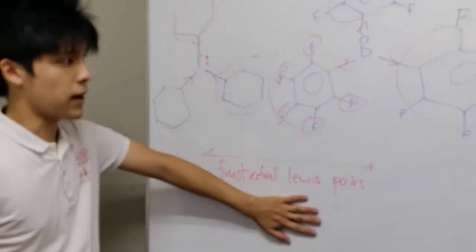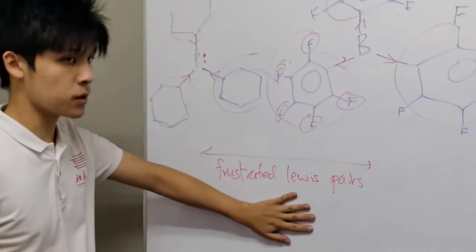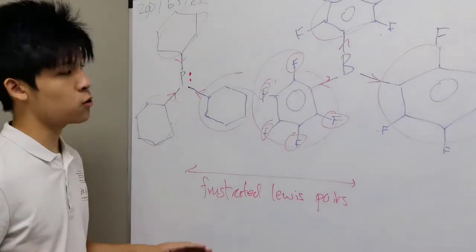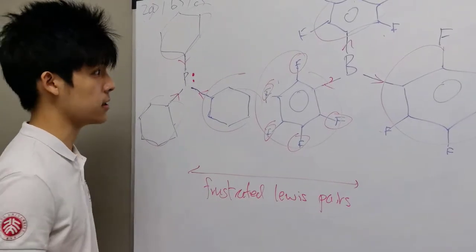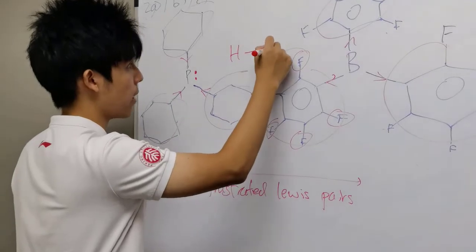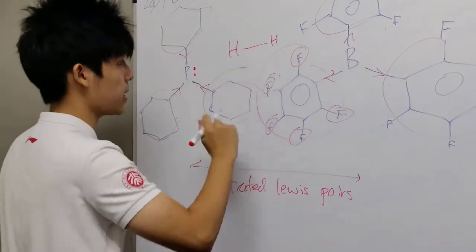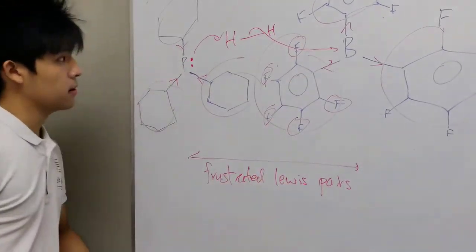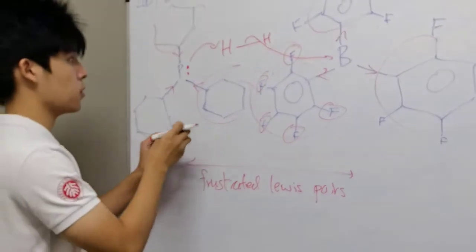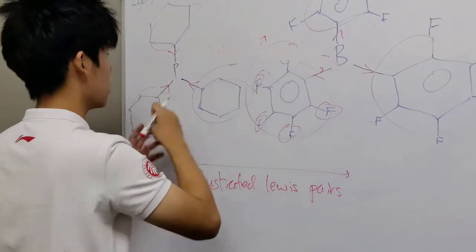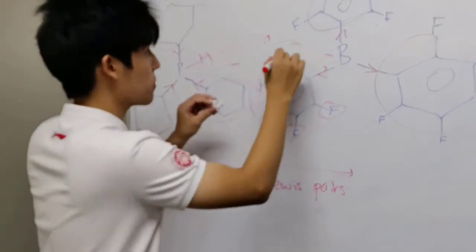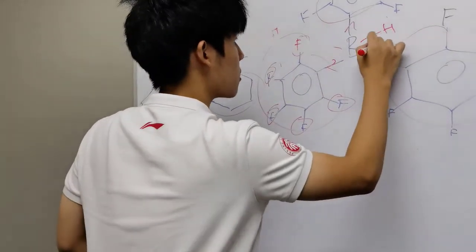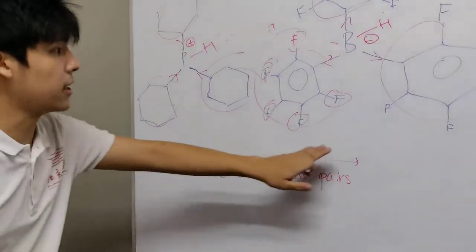The frustrated Lewis pair is very useful in catalysis because it is able to rip apart small molecules very easily. For instance, if you have a hydrogen molecule between the P and B, this could readily happen to produce a phosphonium compound with a positive charge and a borate compound with a negative charge. And so, these are the answers for part C.